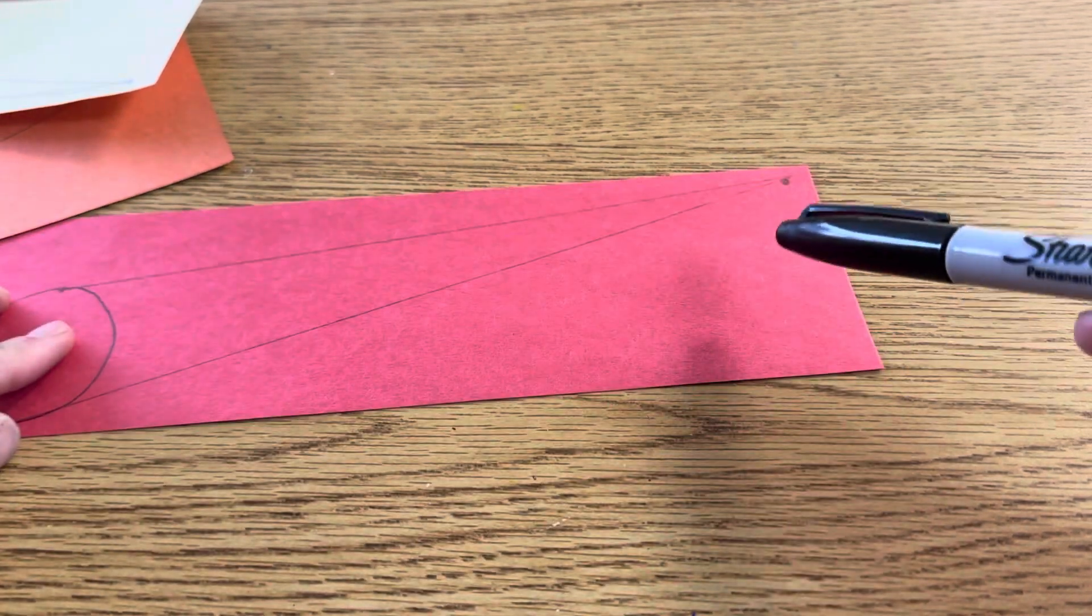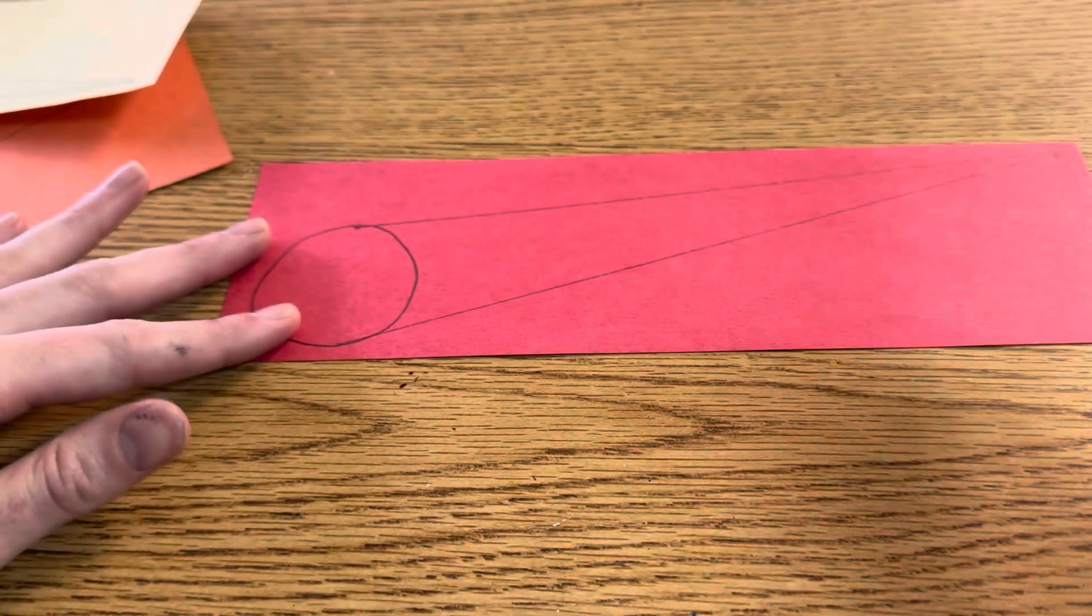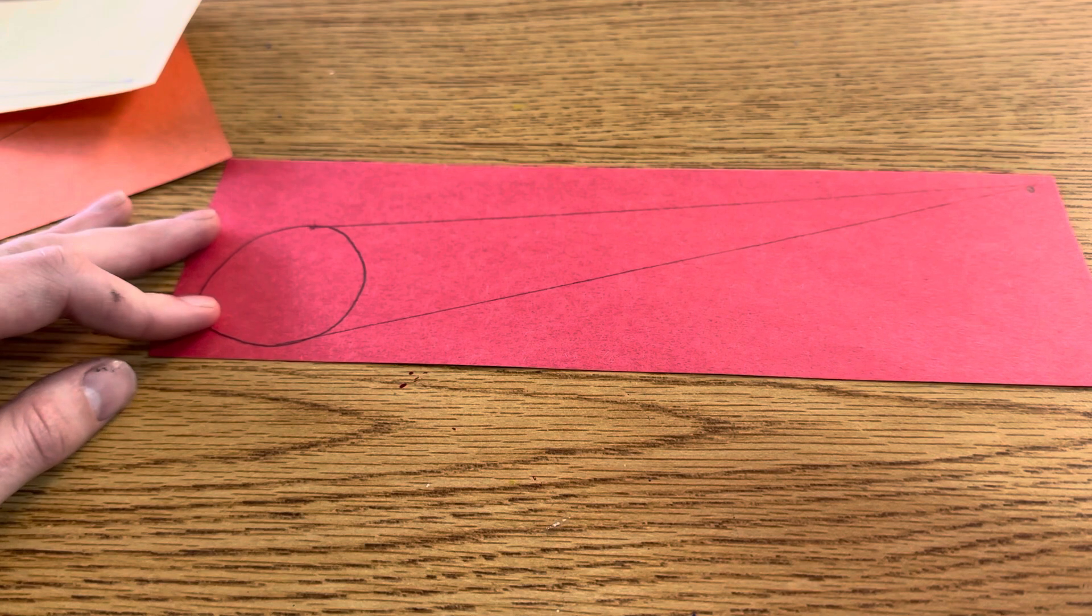All right friends, welcome back. We're starting step two of our 3D shape project that we've been working on. Last week you had six pieces of paper and you had to draw one shape on each of your six papers, and then you had to add a vanishing point in the opposite corner.